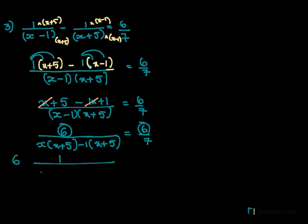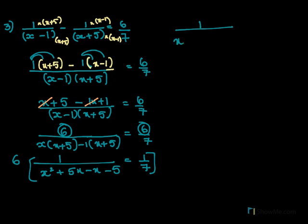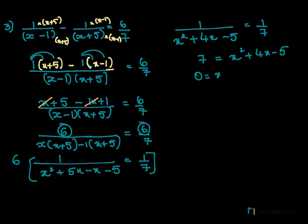After taking 6 common out, we get 1 over (x square plus 5x minus x minus 5) equals 1 by 7. Simplifying the denominator gives x square plus 4x minus 5 equals 1 by 7. Cross multiplying gives 7 equals x square plus 4x minus 5, so x square plus 4x minus 5 minus 7 equals 0, which simplifies to x square plus 4x minus 12 equals 0.